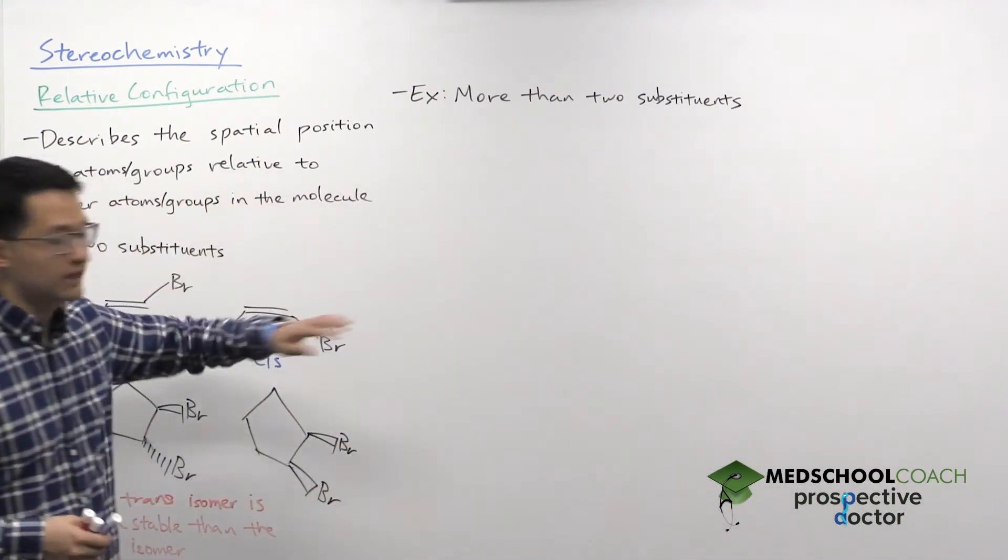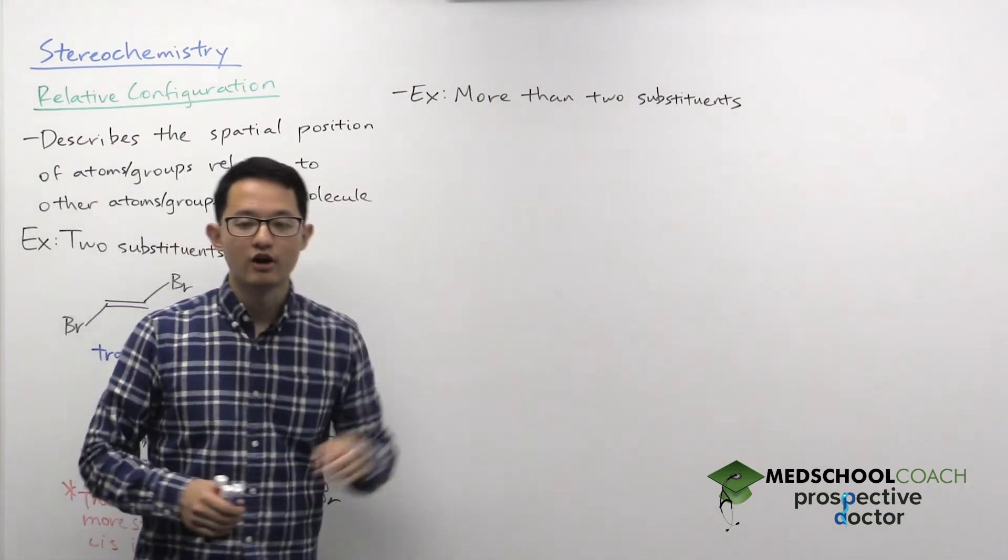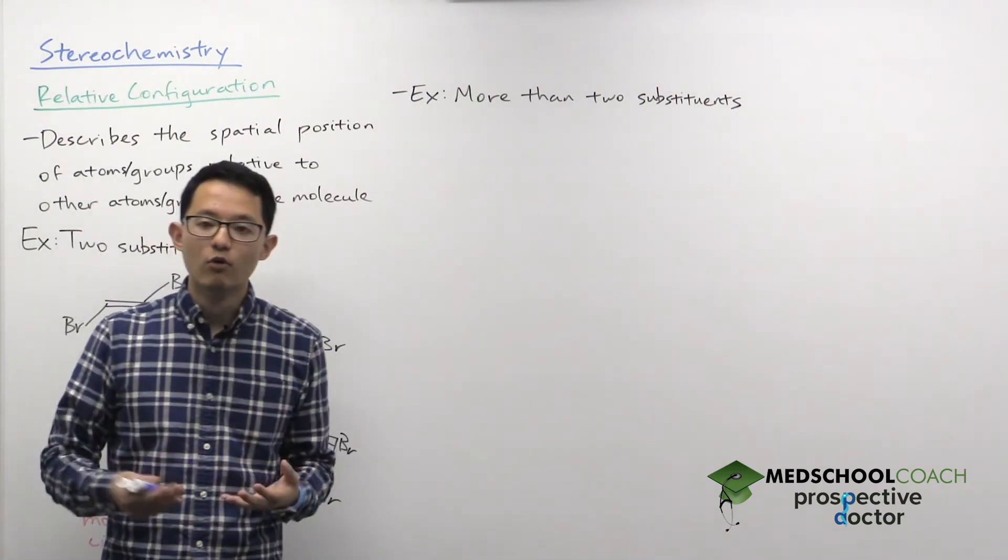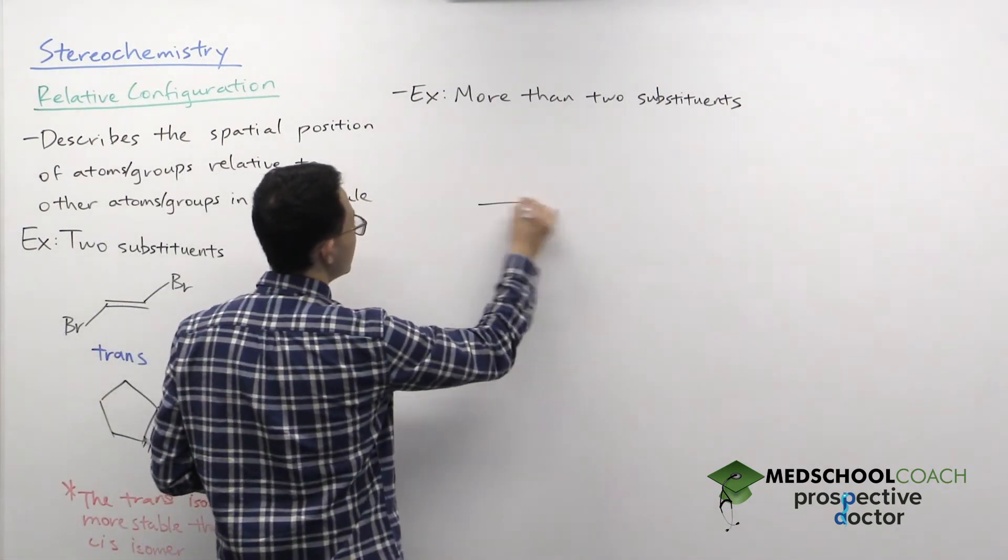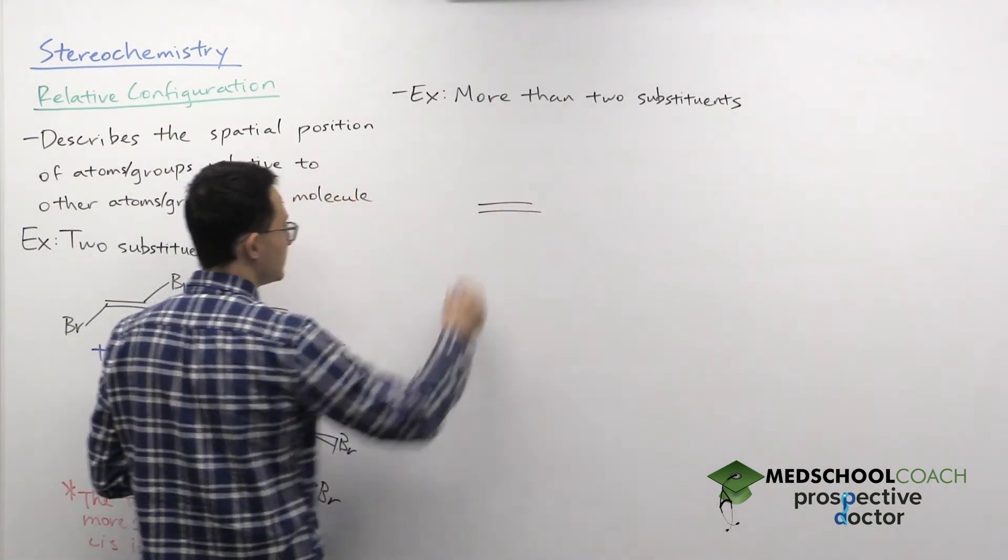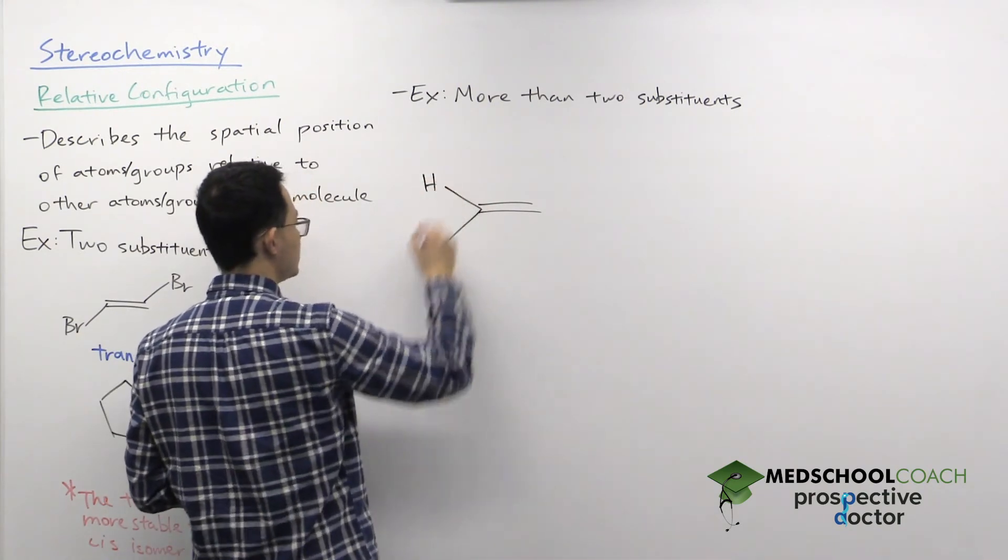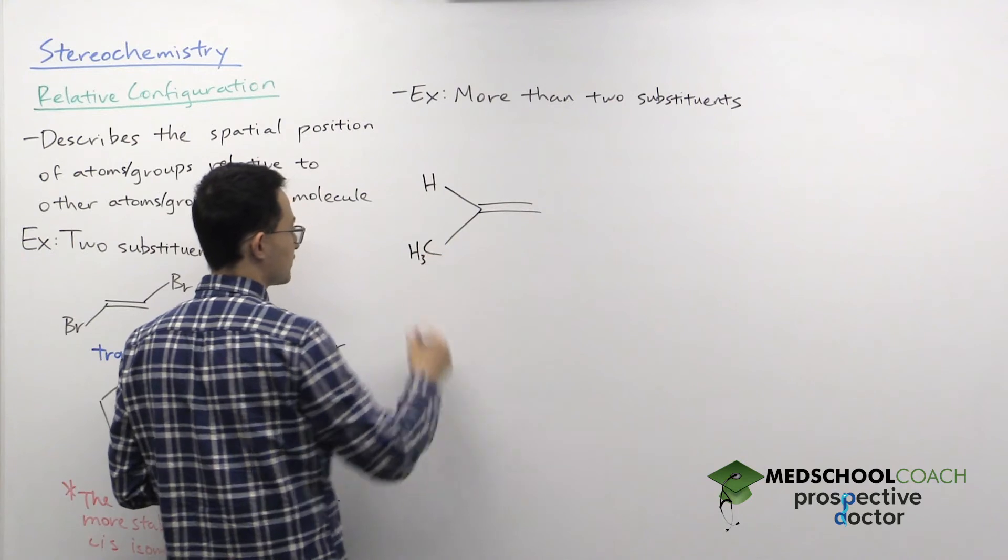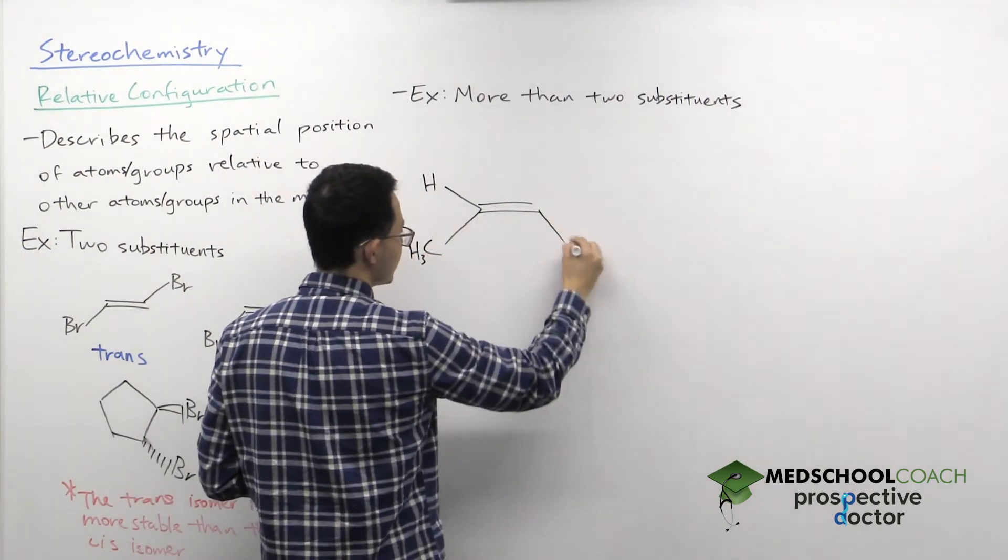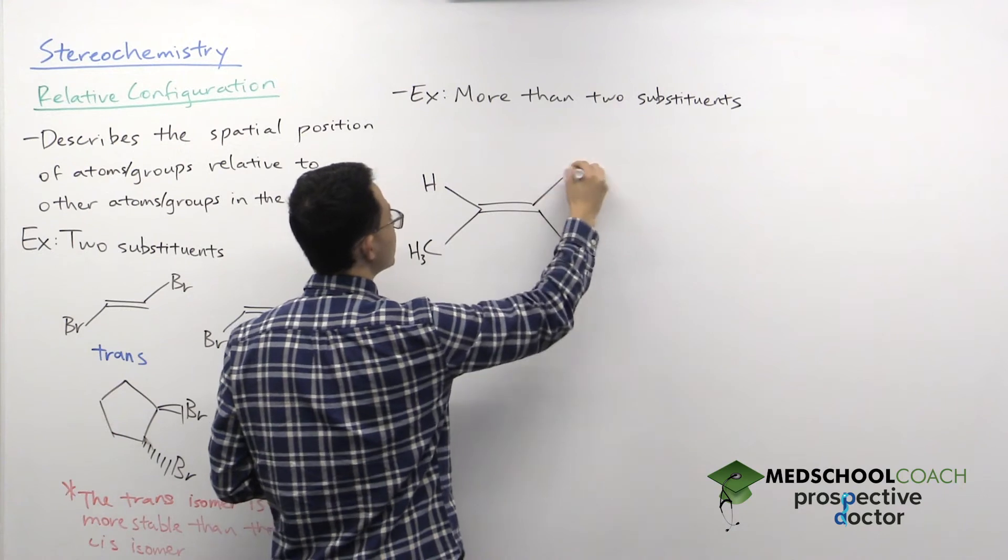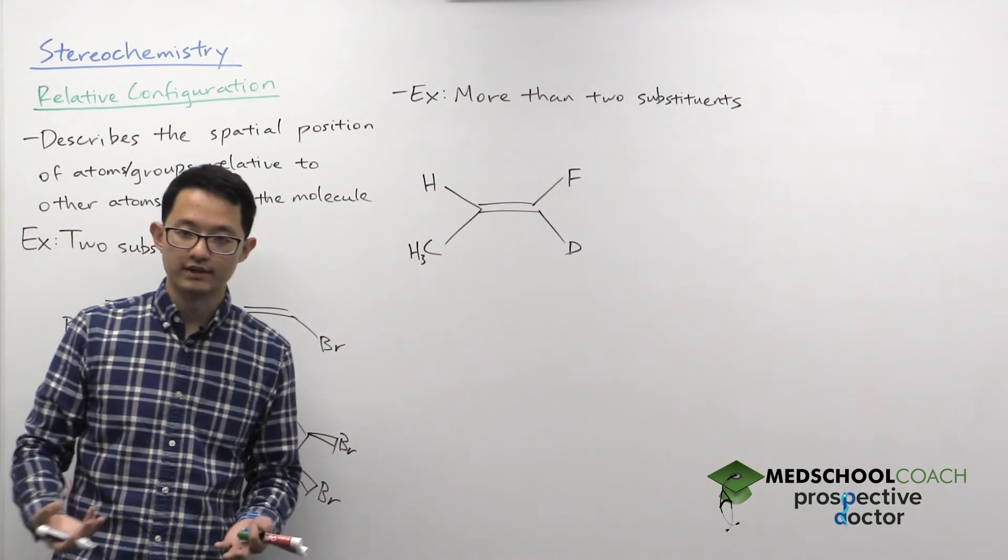All right, so that's how it works if you only have two substituents. Let's now talk about the more complicated case if you have more than two substituents. So what we can draw is a double bond, and what we're going to have is a hydrogen, a methyl group. We're also going to have a deuterium, and we're going to have a fluorine. So now we can see that things are more complicated.